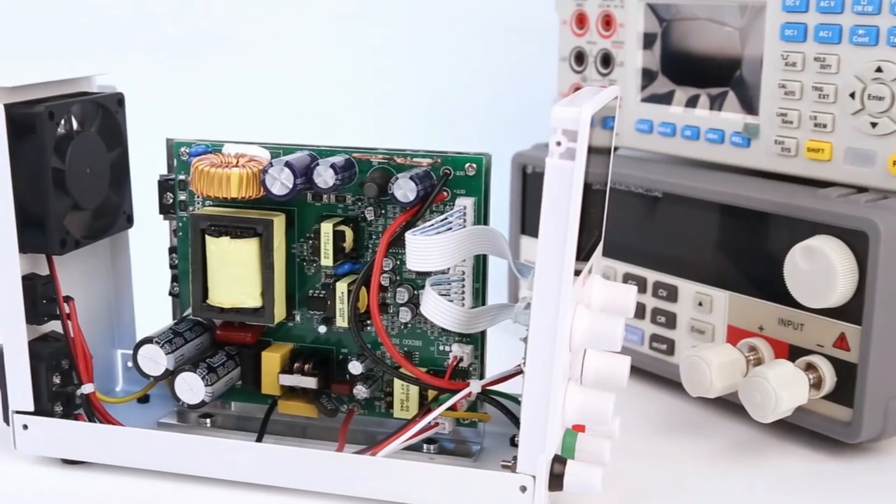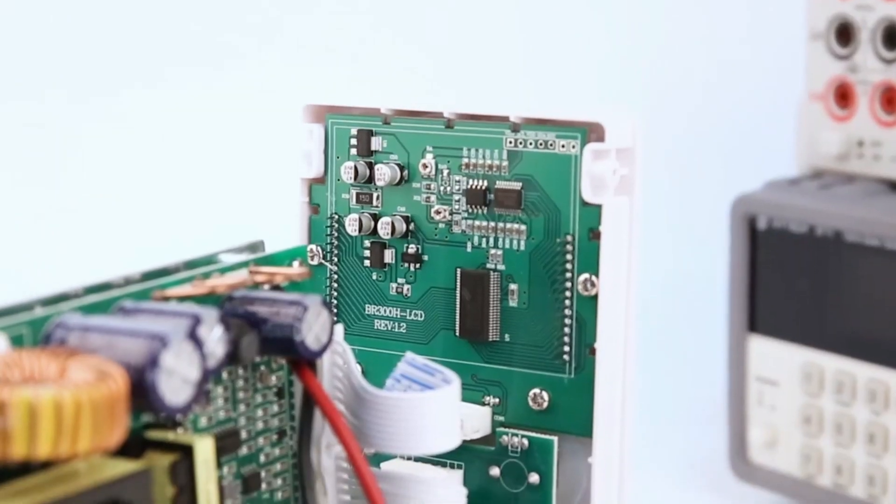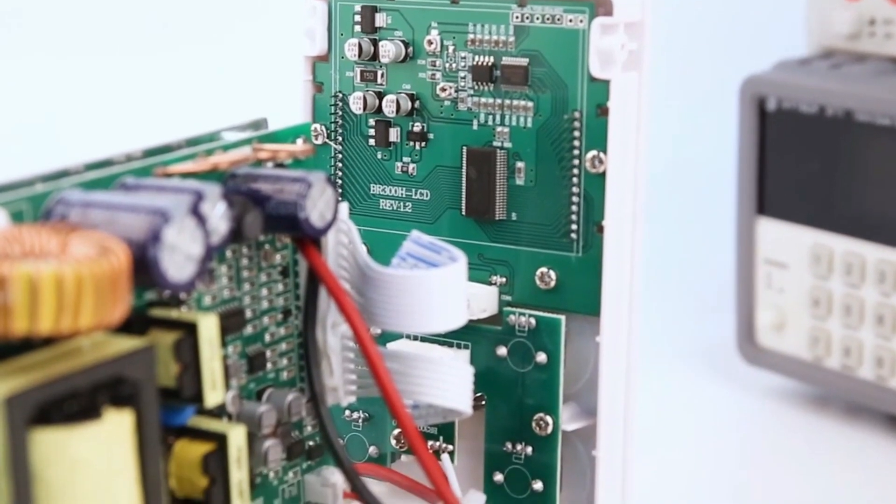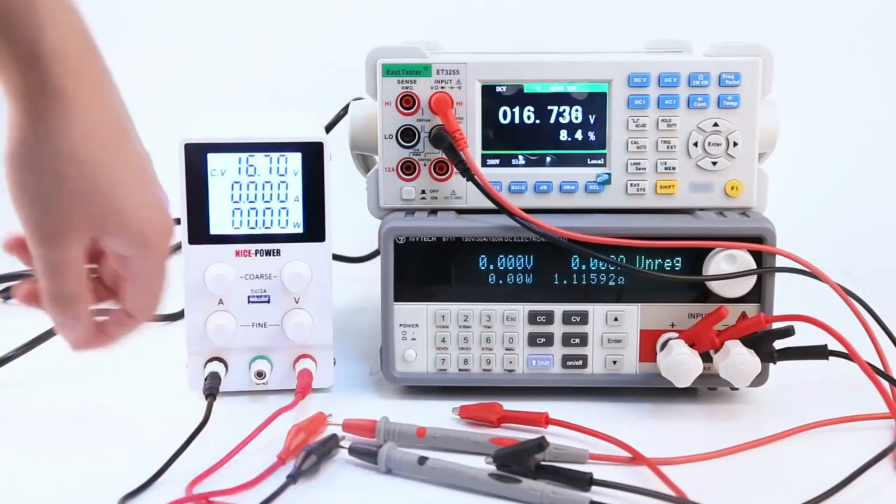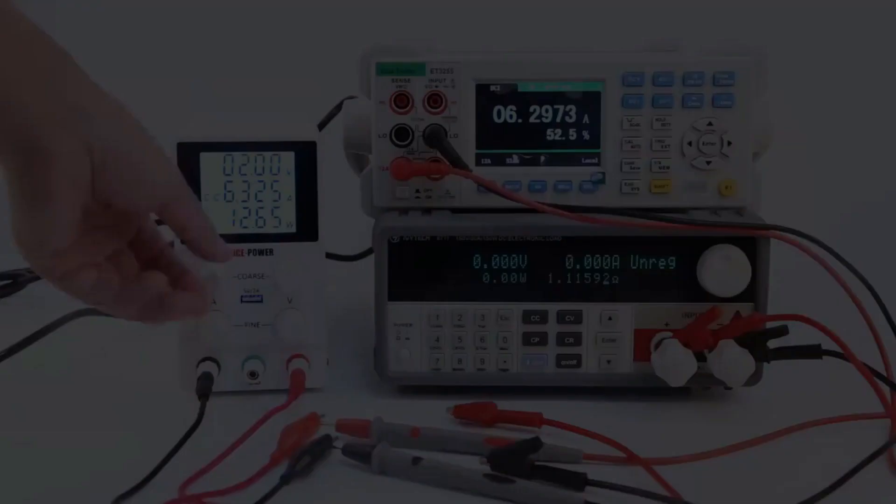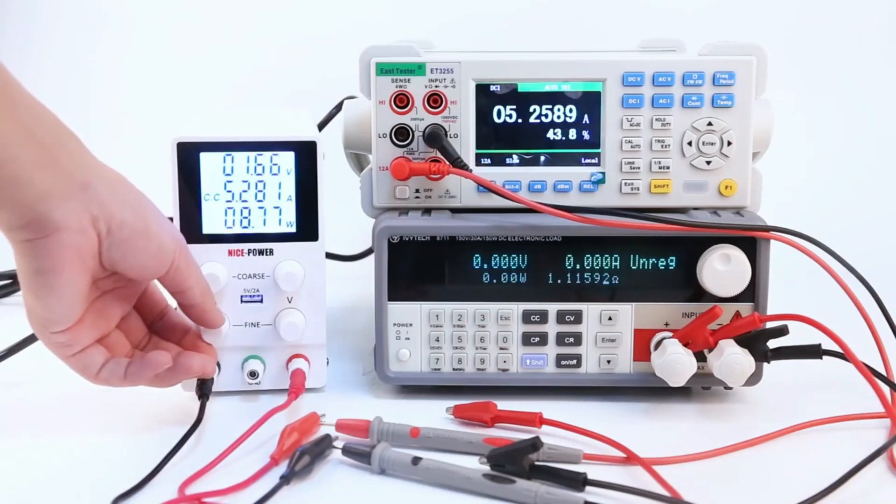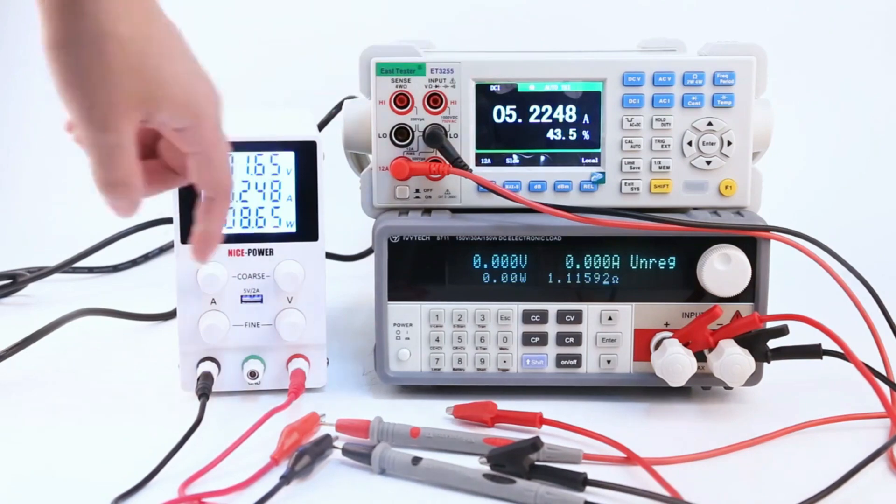The power supply has a low ripple noise level of less or equal 30mV and a rapid recovery time of less or equal 500ms. The clear and concise LED screen provides accurate readings of voltage and current with a voltage resolution of 0.1V and current resolution of 0.1A. The power supply is compact and lightweight, available in black and white color options.